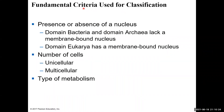The big criteria we use for classifying an organism: first, does it have a nucleus? If it does not have a membrane-bound nucleus, it's either in domain bacteria or archaea. If it has a membrane-bound nucleus, it's in the eukarya. We also look at the number of cells — if it's unicellular, it's most likely bacteria or archaea, although some eukaryotes like protists are single-celled. If it's multicellular, it's definitely a eukaryote.